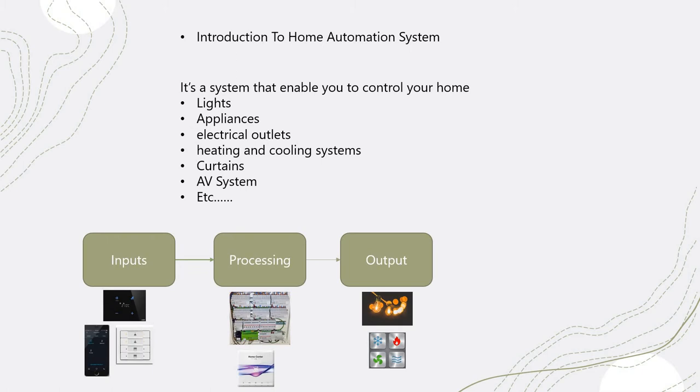If we put the system into a simple diagram, we have an input, then it goes through processing, then it gives an output. An input can simply be a keypad on your wall, your mobile phone, voice command devices like Alexa or Siri, a touch screen within the wall, or a sensor — anything that gives a command to the system.